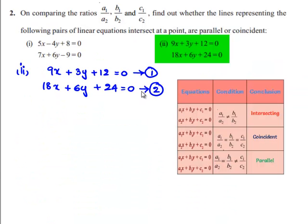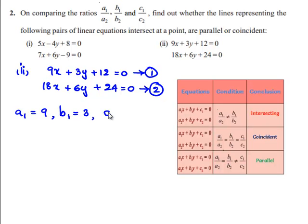If we compare the given set of linear equations with the standard equations a1x plus b1y plus c1 equals 0 and a2x plus b2y plus c2 equals 0, we get a1 equals 9, b1 equals 3, and c1 equals 12. The values of a2, b2, c2 are: a2 is 18, b2 is 6, and c2 is 24.